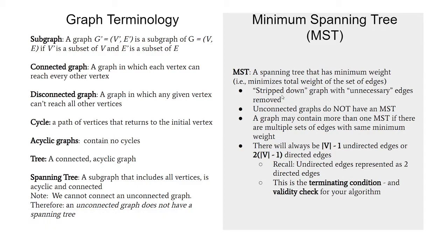A good way to think about MSTs is kind of like a stripped-down graph — I remove any unnecessary edges that connect redundant things. Just like unconnected graphs don't have a spanning tree, they obviously can't have a minimum spanning tree. They can have multiple MSTs if there are multiple sets of edges with the same weight. A rule about MSTs is that there are always V minus 1 undirected edges — or if dealing with directed edges, twice as many, so 2(V-1) directed edges.